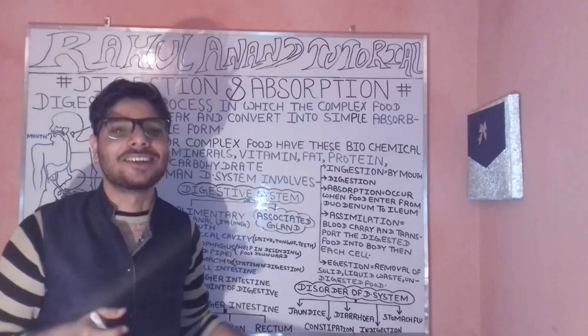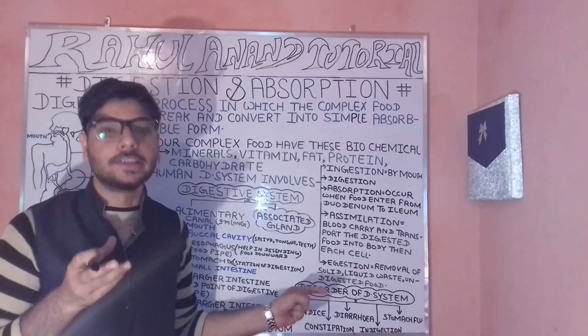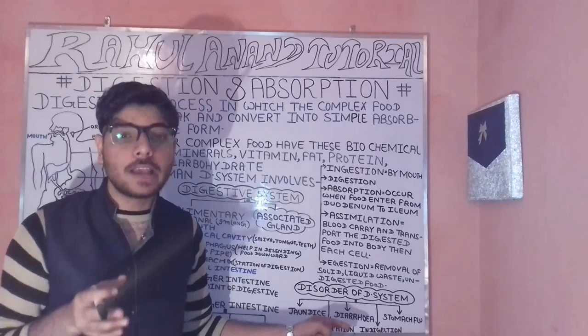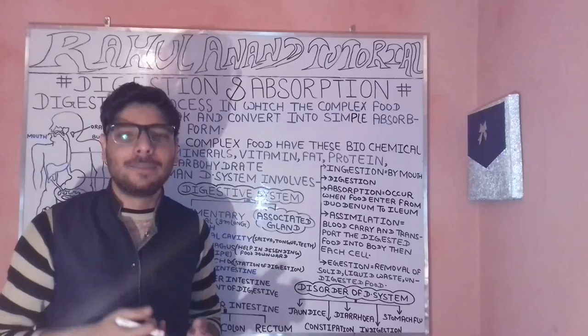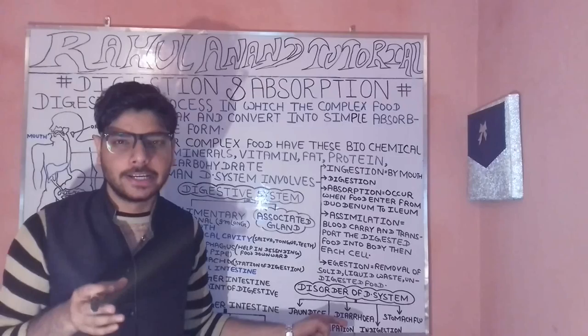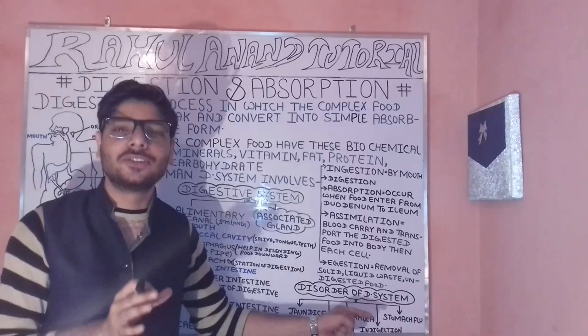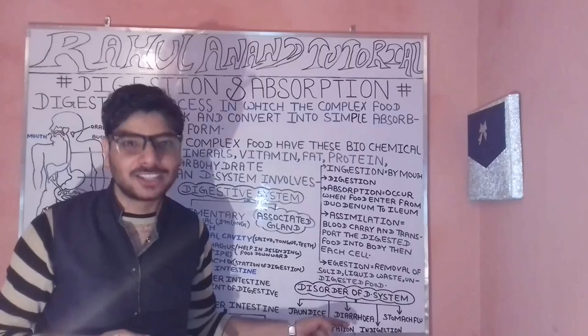Constipation is a condition where your stool or excreted waste becomes dehydrated in nature, causing pain when passing stool. Medical equipment such as enema jars play an important role in treating this condition. Diarrhea is the opposite of constipation — in this case the excretion of waste and urine is higher, and the excreted products are hyperhydrated in nature.